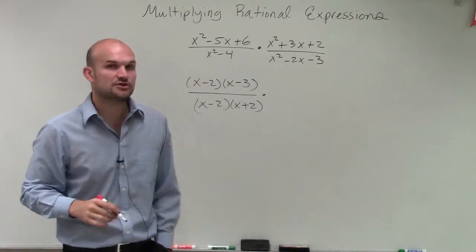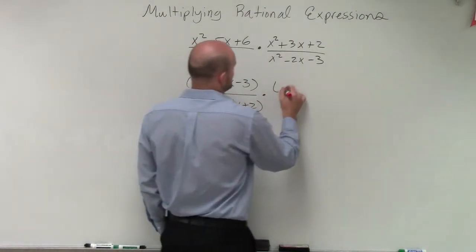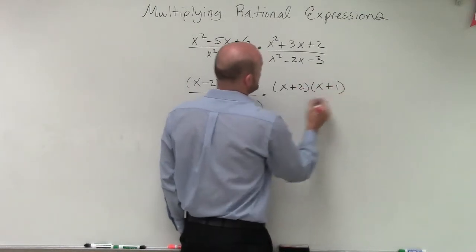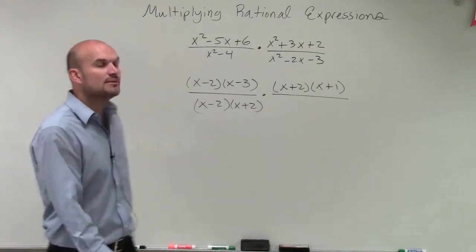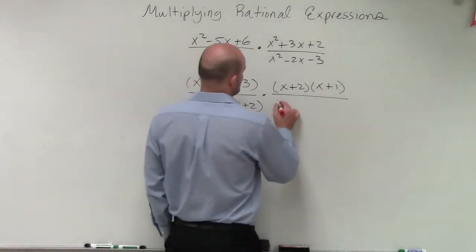What two numbers multiply to give me 2 and add to give me 3? That's x plus 2 times x plus 1. And then in my denominator, x squared minus 2x minus 3, what two numbers multiply to give me negative 3 but add to give me negative 2? That's x minus 3 times x plus 1.